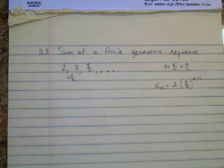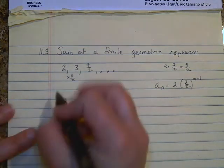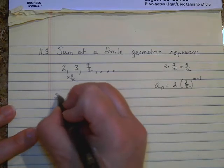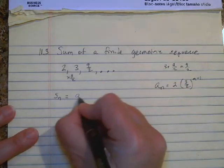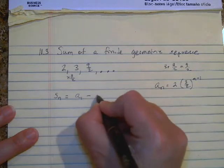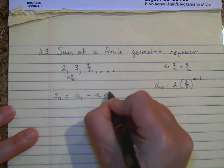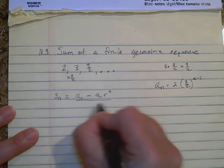To find the sum of a geometric series, this is the formula you use: the sum of however many terms equals the first term minus the first term times the ratio to the n power, over one minus r.